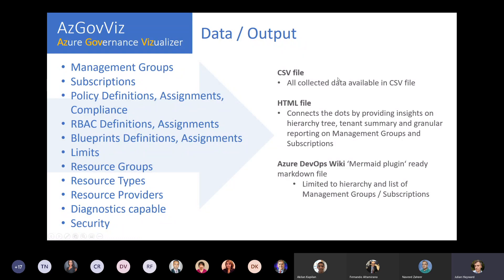The outputs the tool creates are: first, a CSV file so you have raw data you can use directly. Second, and most interesting for today's deep dive, is an HTML file which helps you connect all the dots and get a better understanding of your governance implementation, providing granular reporting on management groups and subscriptions. Third, optionally, there is an Azure DevOps pipeline that creates a markdown file and publishes it as wiki-as-code into your Azure DevOps, with a visual hierarchy overview.